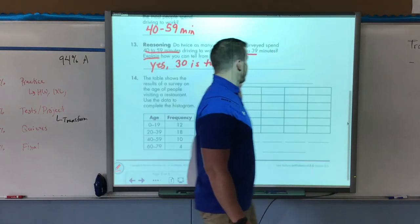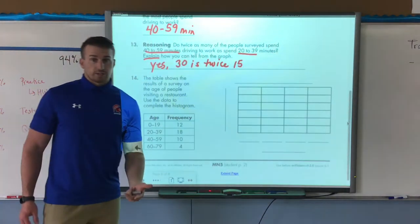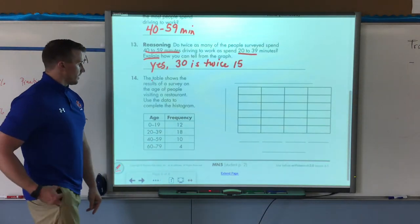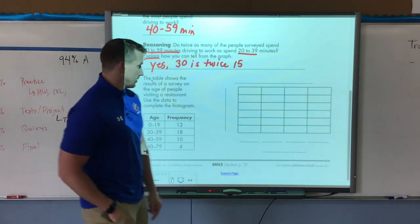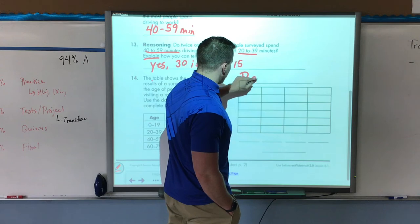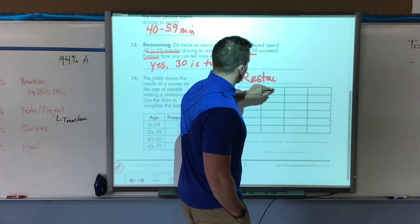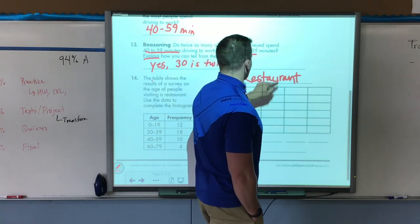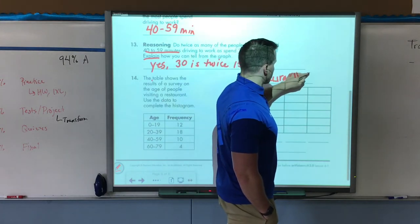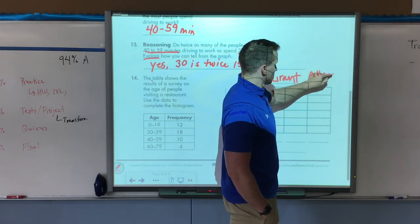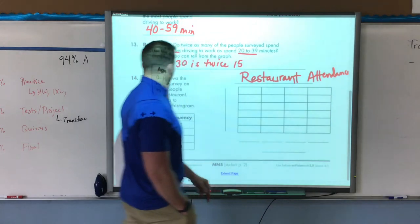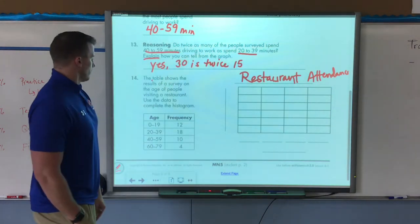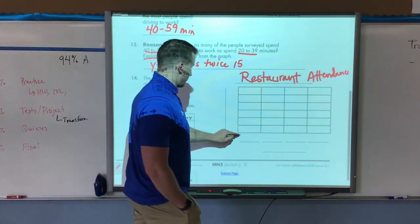Next example, we need to again create a histogram. The table shows the results of a survey on the age of people visiting a restaurant. Use the data to complete a histogram. So I'm going to title this restaurant attendance. Not that people take attendance at a restaurant, because that's just weird. Maybe some people do, but you don't have to.